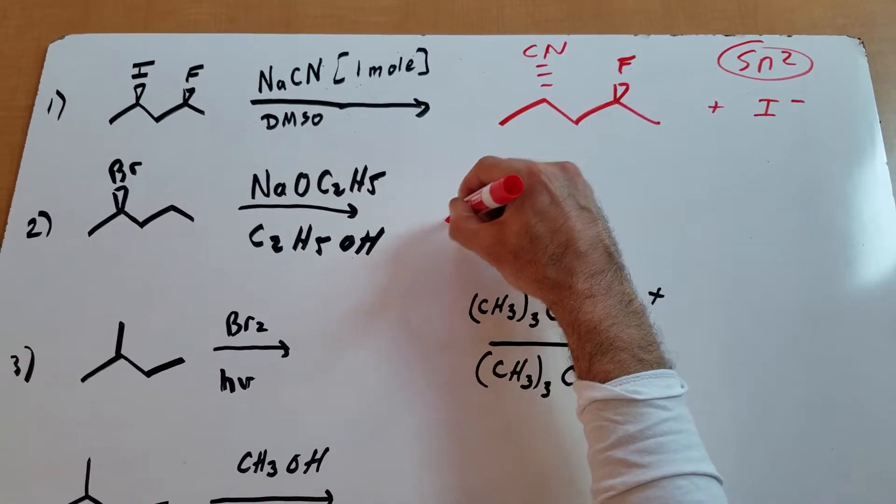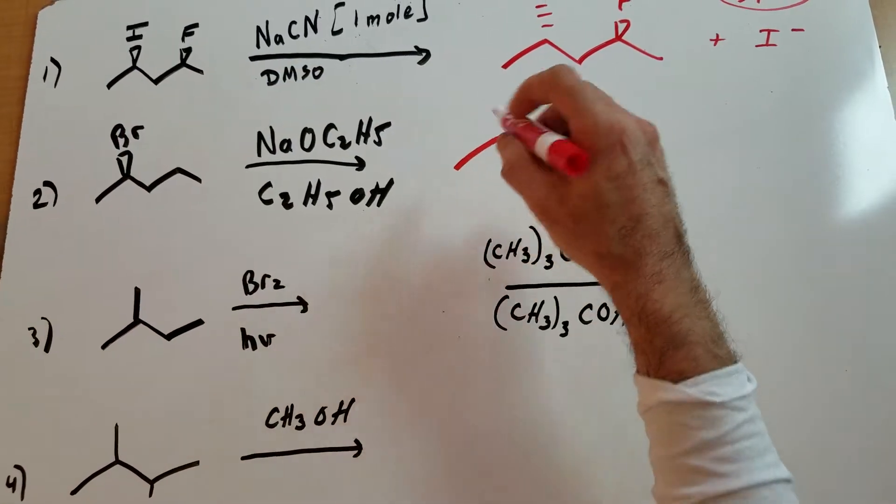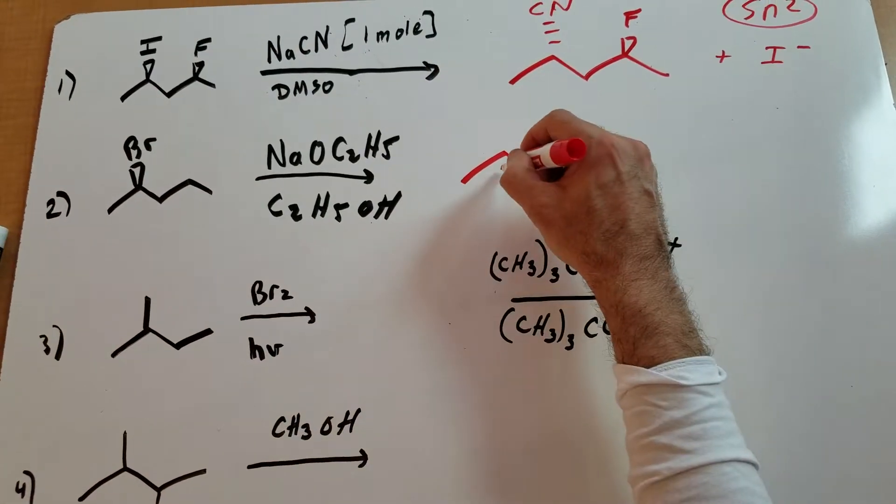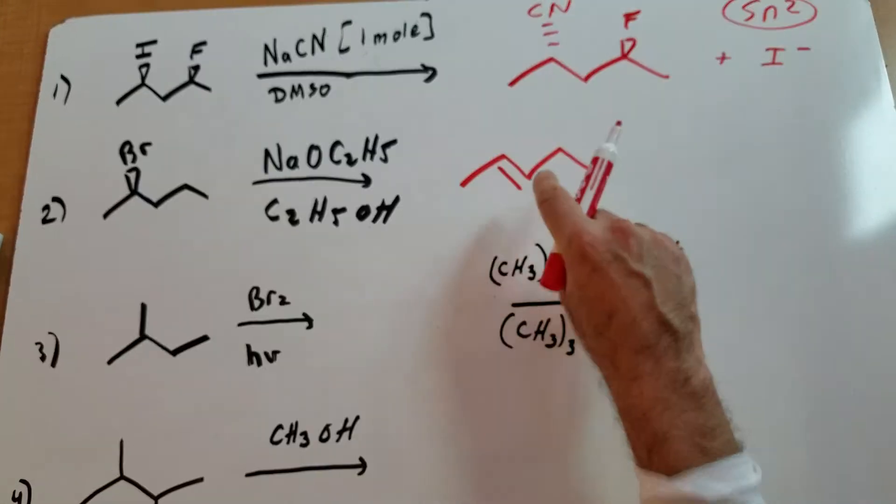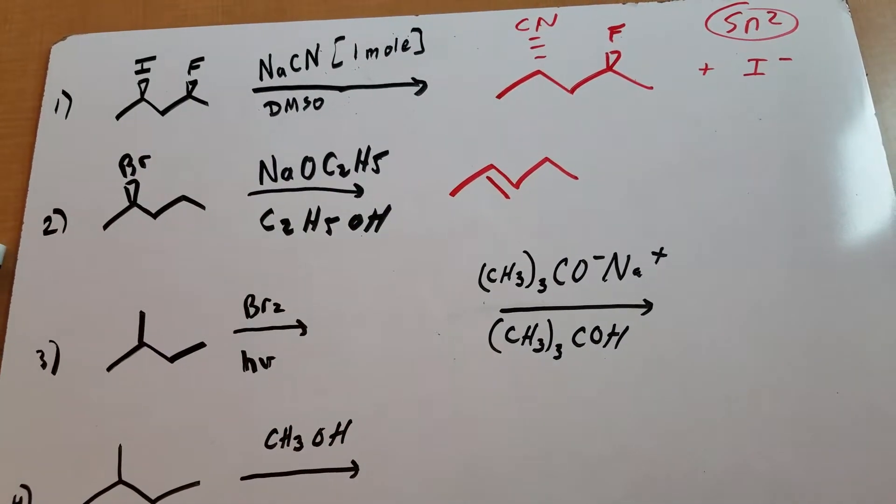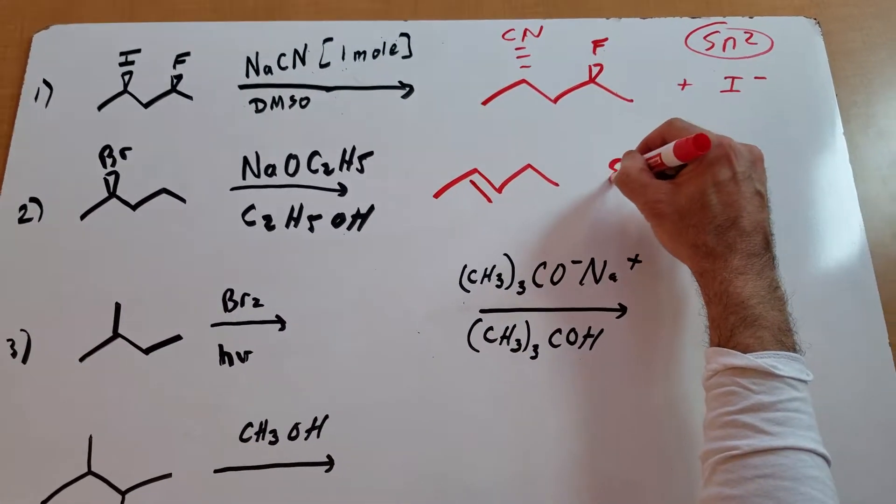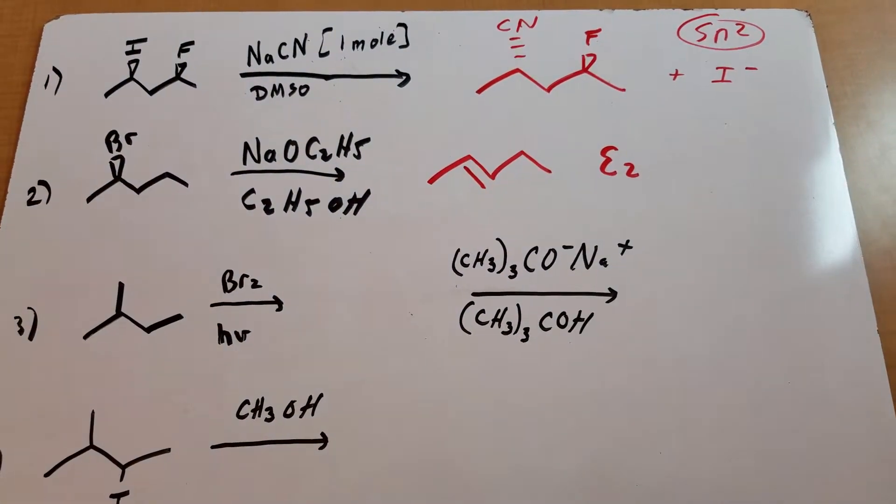So what I do is I show in E2 where I remove the bromine and I go to the inside and I remove the hydrogen from the inside, and I form the more substituted alkene. We call this the Zaitsev product, and therefore this process would be an E2.